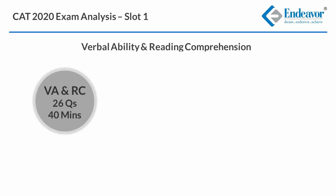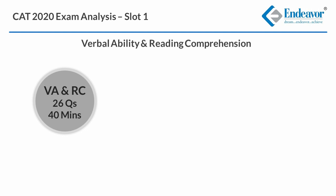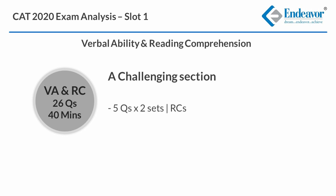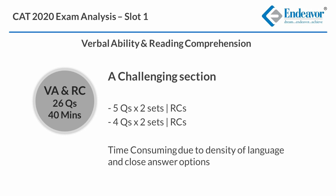The VARC sectional had 18 questions spread across 4 RCs. This sectional actually provided some challenge to the students. The RCs were around 450 to 550 words in length, with 2 RCs carrying 5 questions each and 2 RCs carrying 4 questions each. The density of language and the closeness of options required students to spend more time reading them and regressing to get to the answers.